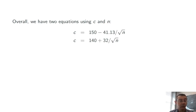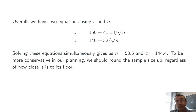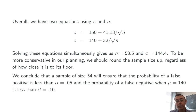Now we're in a fairly simple algebraic situation. We have two equations that both involve two unknowns, c and n, and we can solve these simultaneously. Since they're both solved for c, I can just set the right-hand sides equal to each other and solve. Overall, I get n equals 53.5 and c equals 144.4. That sample size is what we require for our study in order to meet the thresholds for alpha and beta that we've set. Of course, we can't collect a sample of size 53.5, so we need to round it. To be more conservative in our planning, we should always round the sample size up regardless of how close it is to our floor, since a larger sample size reduces both our probabilities of type 1 and type 2 errors. We conclude that a sample size of 54 will ensure that the probability of a false positive is less than 5%, and the probability of a false negative when the true population mean is 140 is no worse than 10%, just like we hoped.